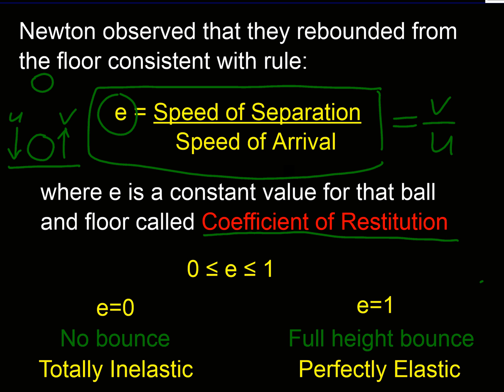Well, we talked about having a really bouncy ball, and if we had a really bouncy ball, our velocity going out is the same as our velocity going in, so that means that e would equal 1. And if e equals 1, then we're going to get a full height bounce, and this is called a perfectly elastic collision.